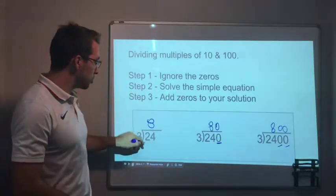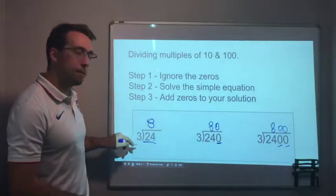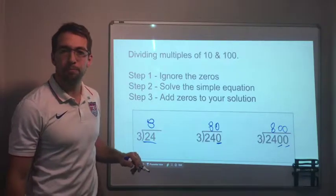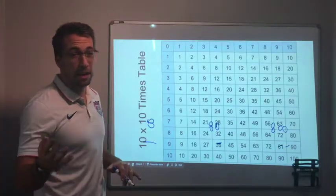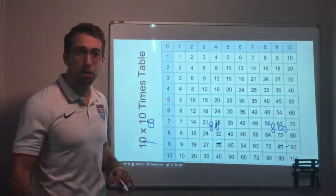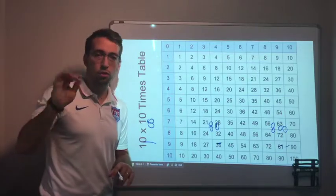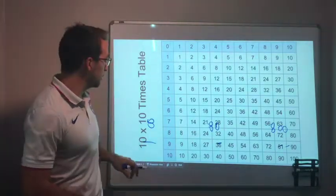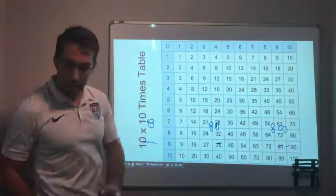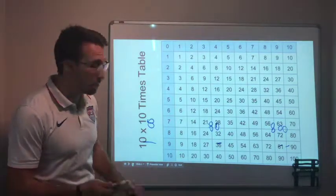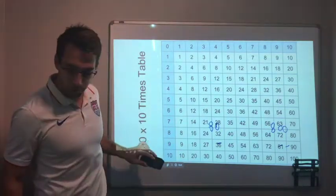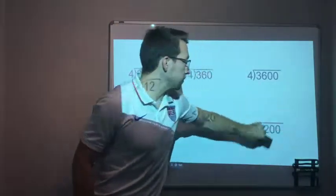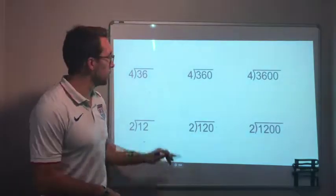When we're dividing multiples of 10 and 100, we can simplify by erasing the zeros in our mind, solve the equation — 24 divided by 3 — and then add the zeros back later. We have to know our times tables. This is crucial. Know your times tables and division and multiplication become that much simpler.